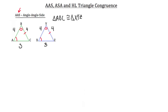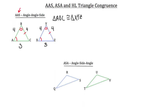Let's take a look at the next congruency postulate, which is angle side angle, or ASA. ASA refers to when you have two triangles that have two angles that are congruent and one side that's congruent for both triangles. The side in ASA falls between the two angles — the S comes between the two A's — meaning the congruent side must fall between those two angles.